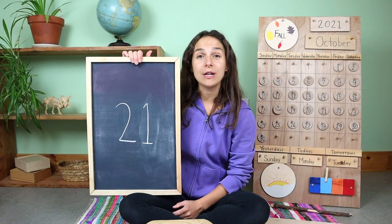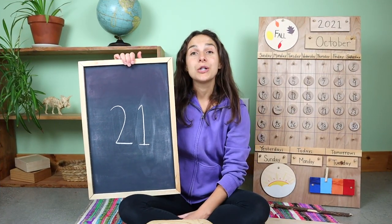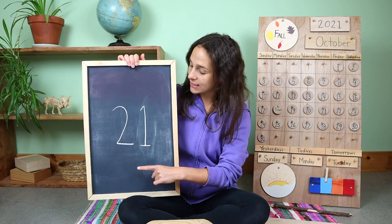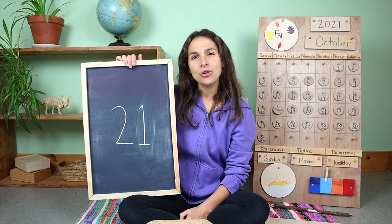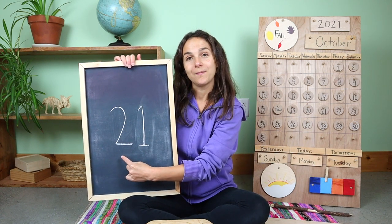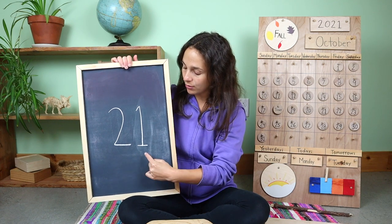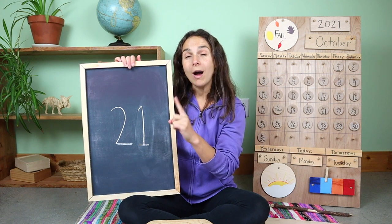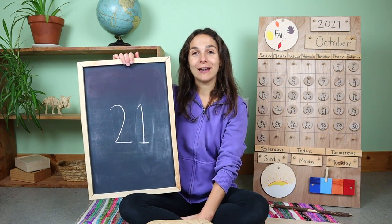And here is the new number of the week. This is the number 21. Now, when you write this double digit number, you have to write two numbers. Can you show me with your fingers what number you write first? Two. And after the number two, you write this number. One. Two, one. Twenty-one.